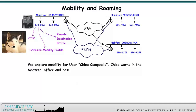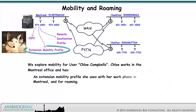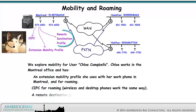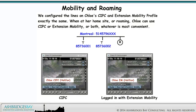We explore mobility for user Chloe Campbell. Chloe works in the Montreal office and has an Extension Mobility profile she uses with her work phone in Montreal and for roaming. CIPC is used for roaming — wireless and desktop phones work the same way — and she has a remote destination profile for single number reach. We configured the lines on Chloe's CIPC and Extension Mobility profile exactly the same. When at her home site or roaming, Chloe can use CIPC or Extension Mobility or both, whatever is most convenient.